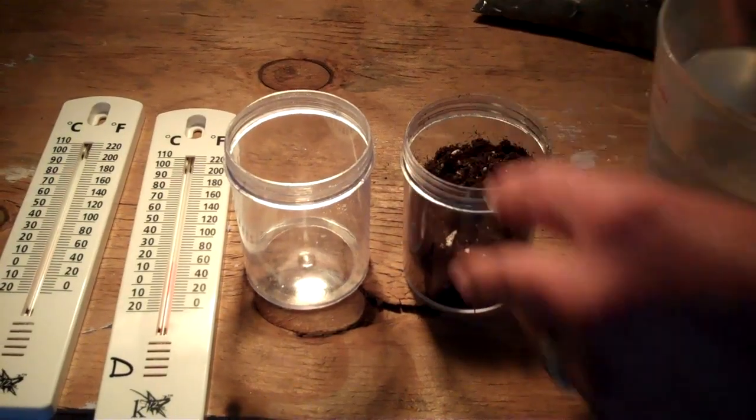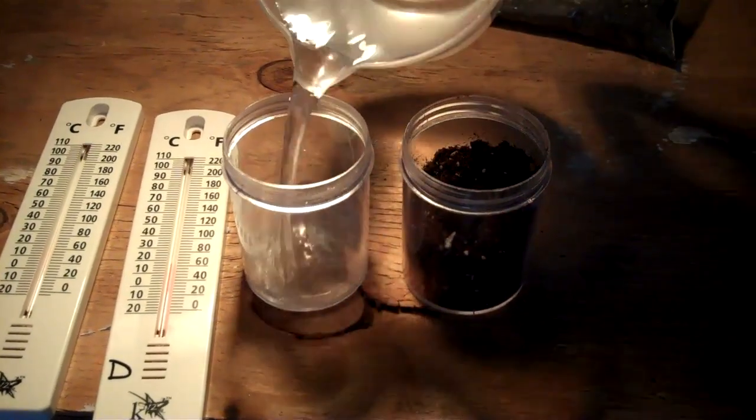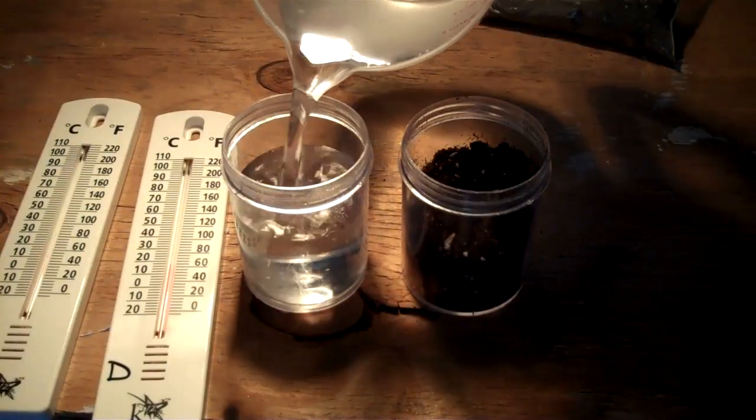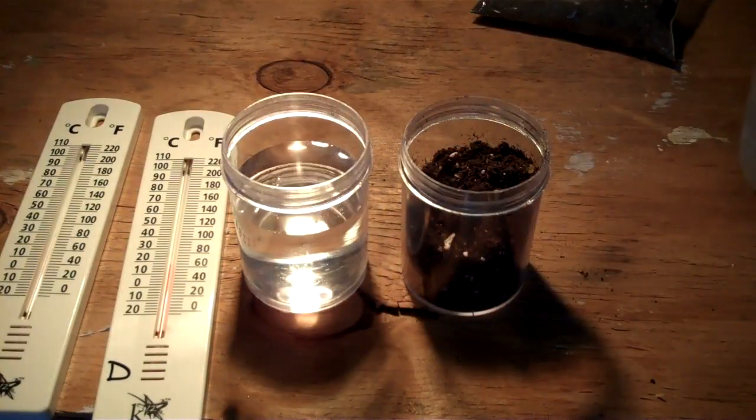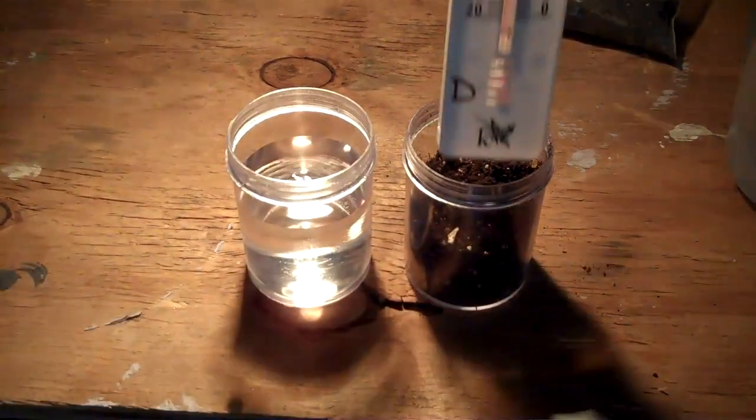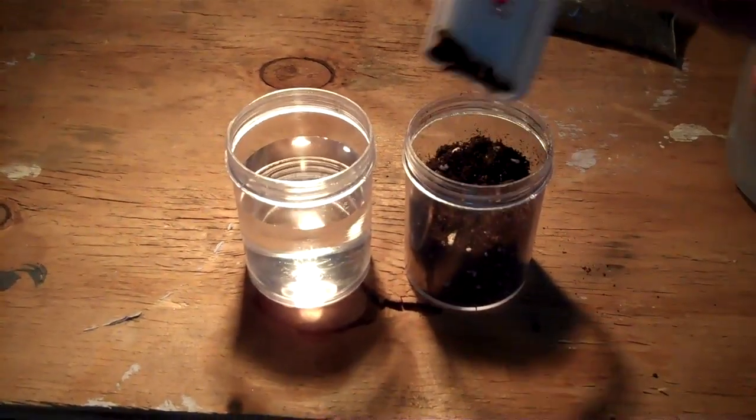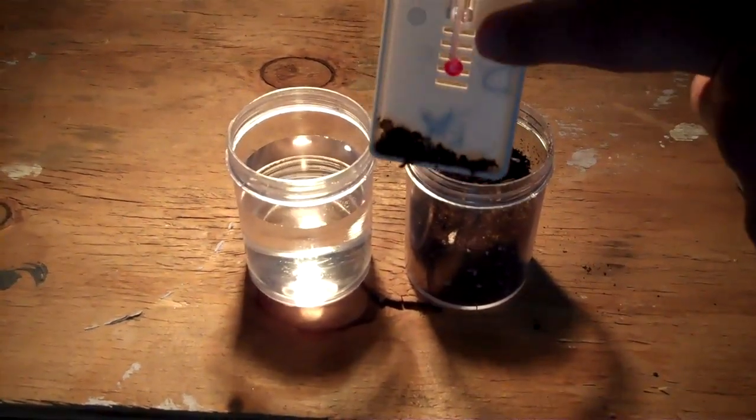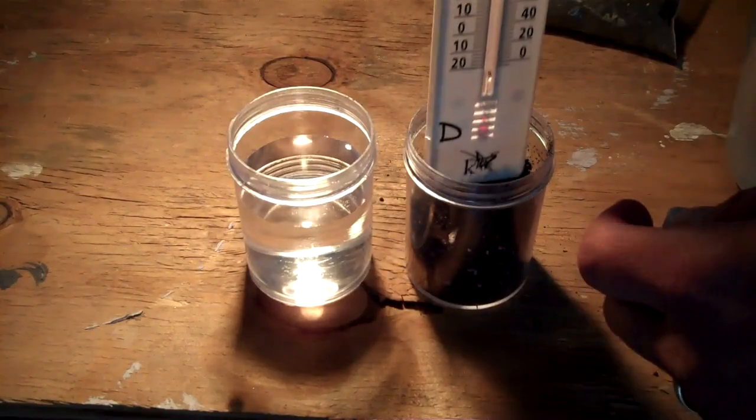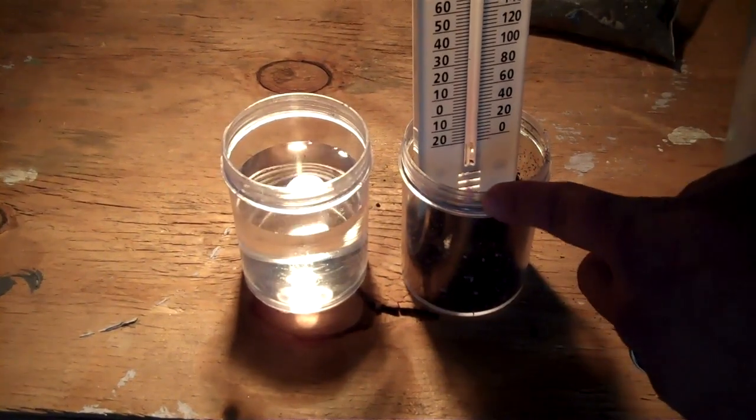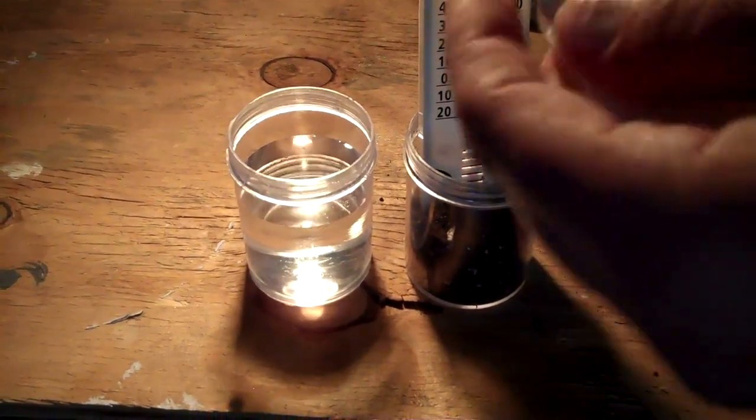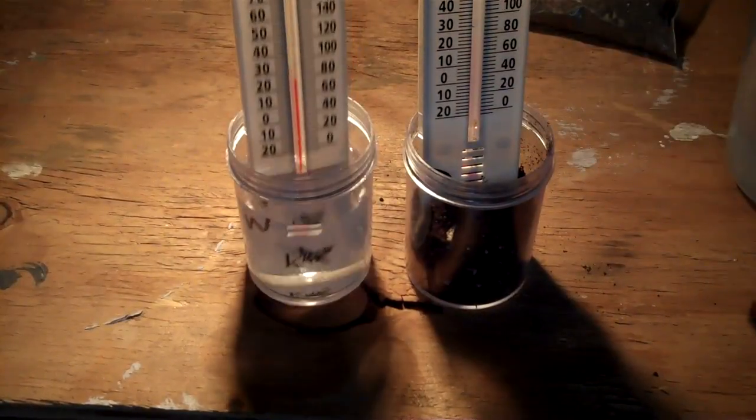And you're going to take some water and fill the other container about three quarters of the way up, and then you're going to take your thermometers and stick them in so that the bulb on the back of the thermometer is below the soil and below the water.